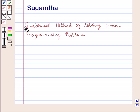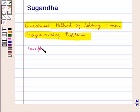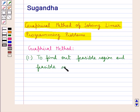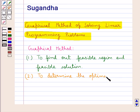Hello and welcome to the session. In this session we will discuss the graphical method of solving linear programming problems. The graphical method involves two main steps: the first one being to find out the feasible region and the feasible solution, and the next step is to determine the optimal solution from the feasible region.